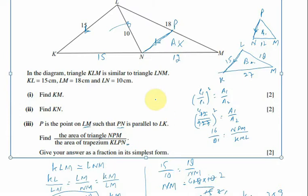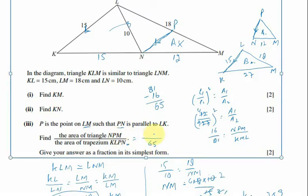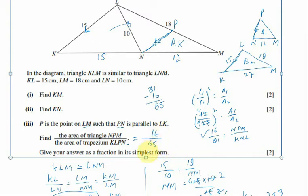So if we take 81 minus 16, it becomes 65. The area of trapezium KLPM is 65, and the area of triangle NPM is 16. The answer is 16 upon 65, which is the correct answer, and we cannot simplify it further — it is already in simplest form.